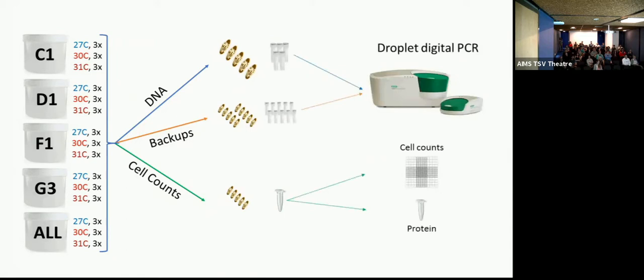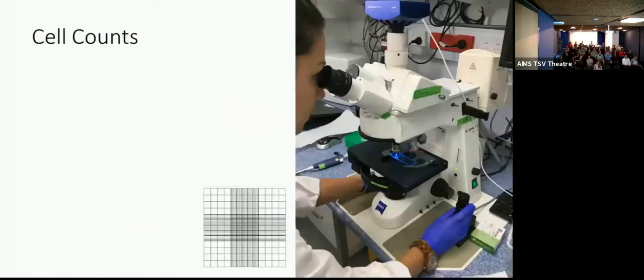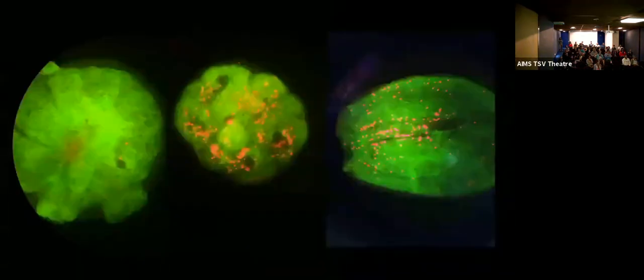Because downstream, what we did is we looked at the cell counts. We're still working on the proteins, but we used a droplet digital PCR to basically figure out what was going on inside each individual larvae. So for the cell counts, at each of our sampling points, we took three larvae from each treatment, each pot, squashed them under a microscope slide, and counted how many cells were inside. This is an idea of what we were looking at. You can see the larvae, the red dots are the symbionts fluorescing, and you can see them starting to get more and more infected over time.